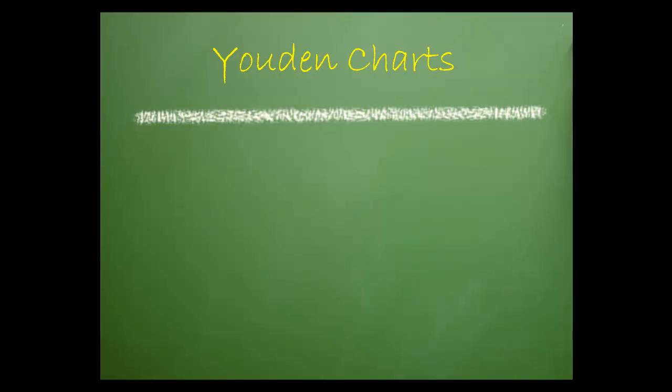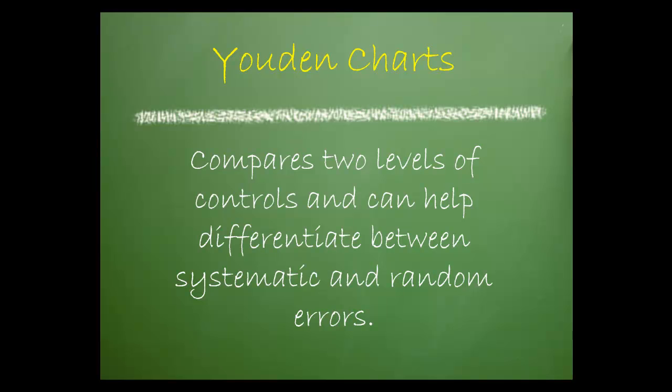Youden Charts were developed in the 1950s by Dr. William Youden. The chart allows the user to compare two levels of controls and can help differentiate between systematic and random error.